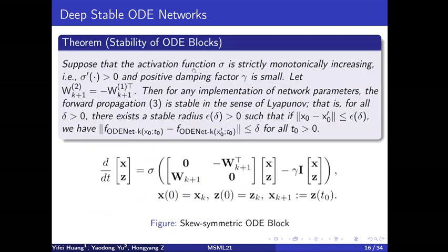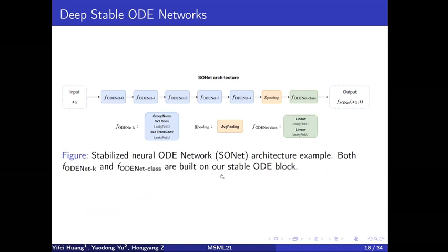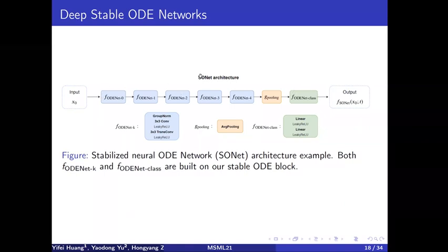With the skew-symmetric block, we form our deep stable ODE network with six stable ODE blocks, followed by a pooling layer and one final ODE block to produce the output. We now show experiments evaluating the robustness of our deep stable ODE networks.